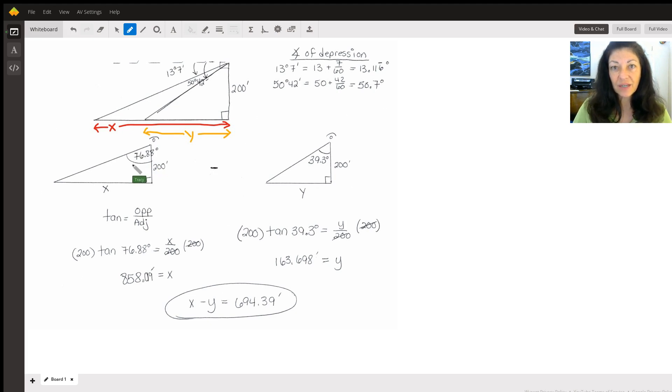Tangent is opposite over adjacent, and in this case it would be the tangent of 76.88 equals x divided by 200. To get x by itself, you're going to multiply both sides by 200 and solve x at 858.09 feet.